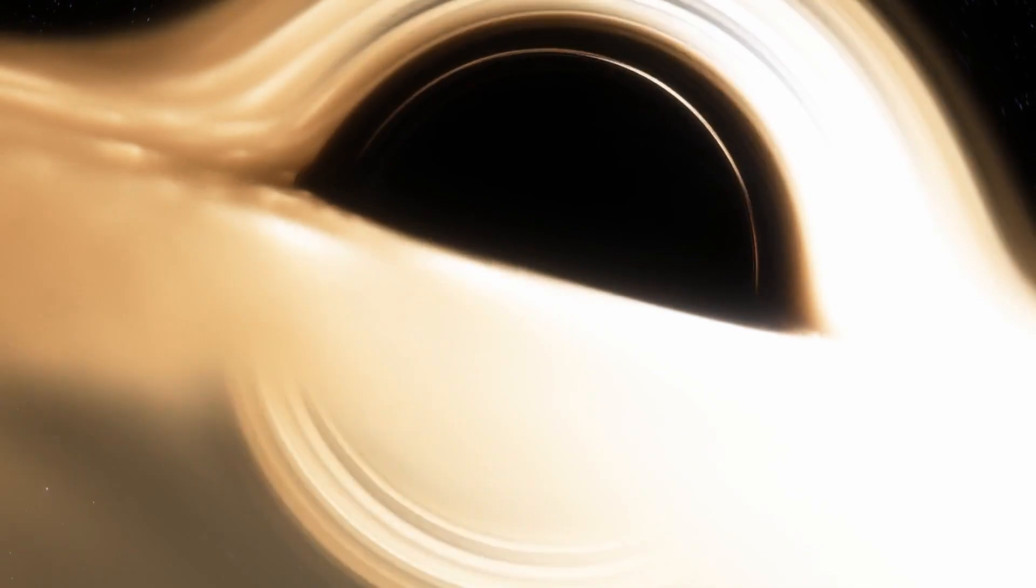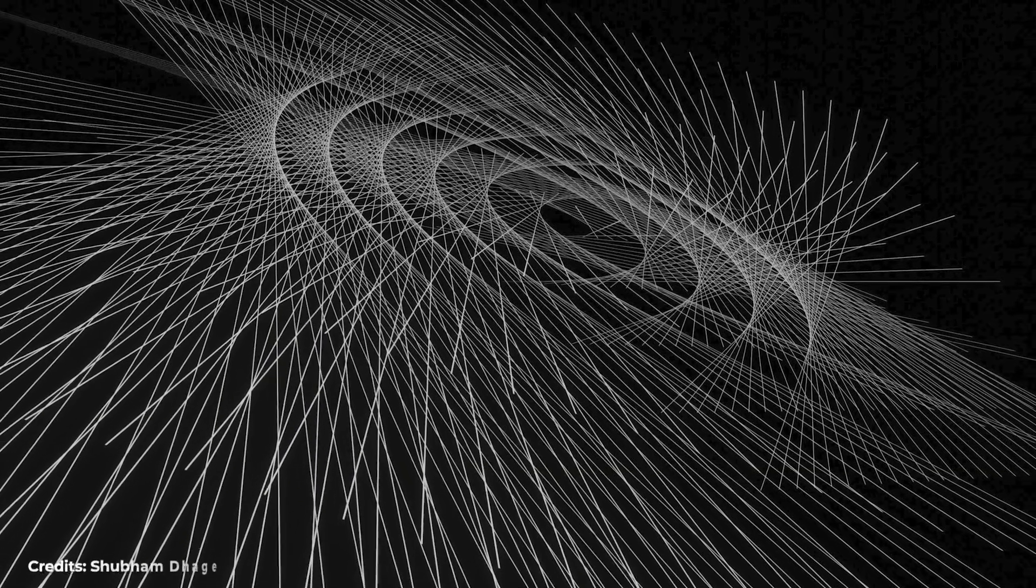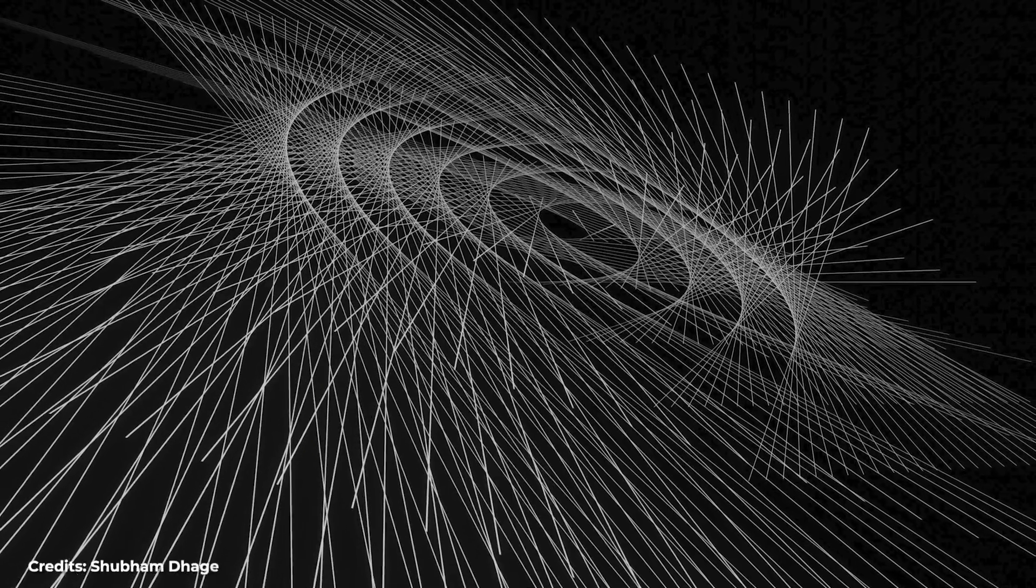Researchers have found that in certain simplified black hole models, information about the interior can be detectable at the event horizon. In more complex scenarios, these islands can extend beyond the black hole's boundary.